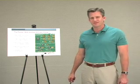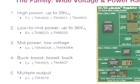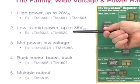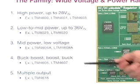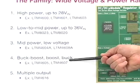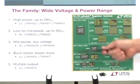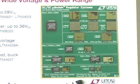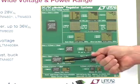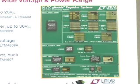Linear Technology has a wide family of products in the Micro Module technology. We have high power options up to 28 volts in and out to 12-amp capability, low to mid power up to 36 volts in from a few hundred milliamps to a few amps, and mid power low voltage devices in the 3.3 and 5 volt input in the 4 to 8 amp range. We have a unique buck-boost part that allows you to step up or step down voltages seamlessly, and also multiple output devices. Several different package sizes are available: 15mm × 15mm × 2.8mm, 9mm × 11mm × 2.8mm tall, 15mm × 9mm, and 6mm × 11mm, to accommodate many different applications.